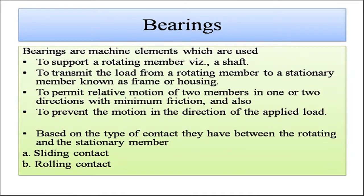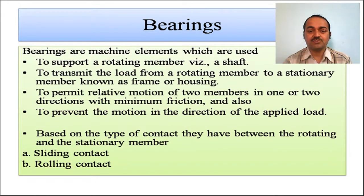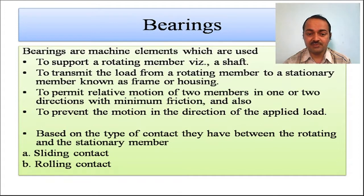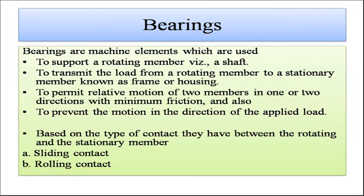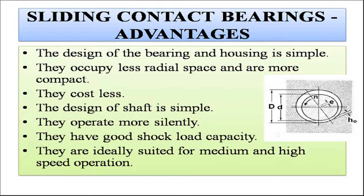Bearings are machine elements used to support a rotating member (the shaft), to transmit the load from a rotating member to a stationary member (the frame or housing), and to permit relative motion of two members in one or two directions with minimum friction. They also prevent motion in the direction of the applied load. Based on the type of contact between the rotating and stationary member, there are two types: sliding contact bearings and rolling contact bearings.